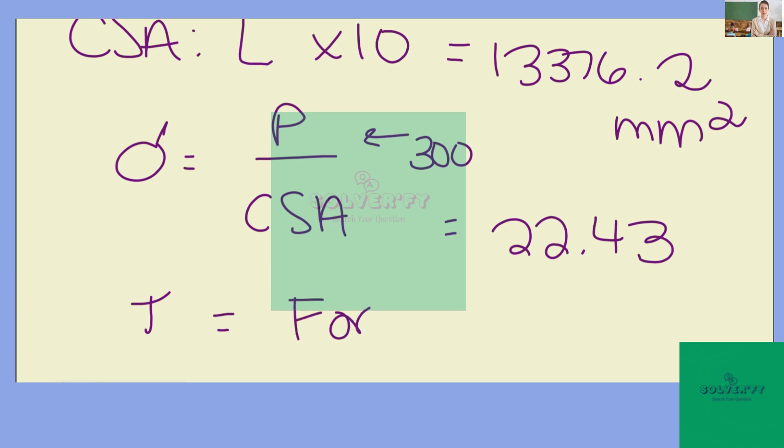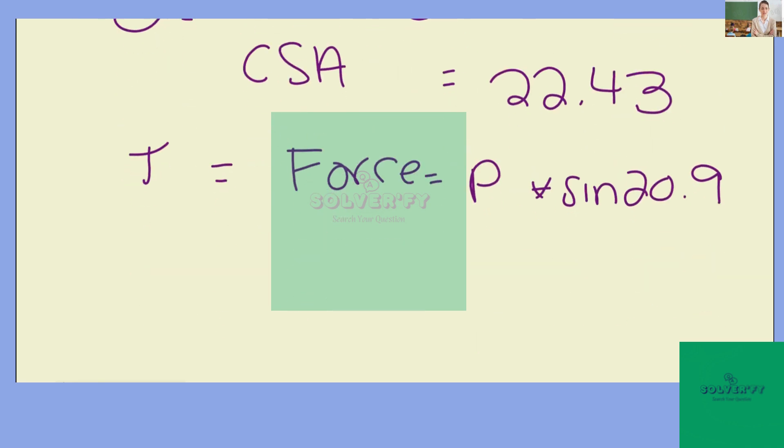Our force can be calculated by taking P times sine of 20.9 degrees. Since we know that P is 300, we can calculate our force to be 107.34.